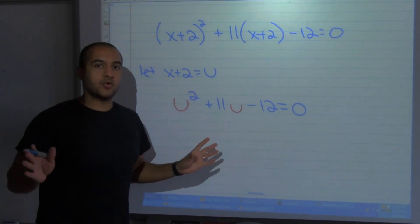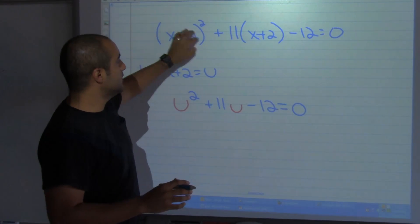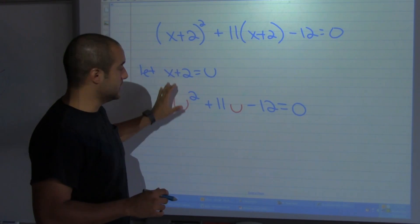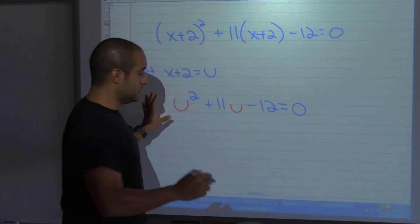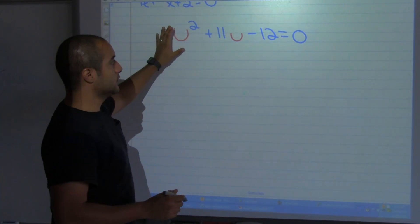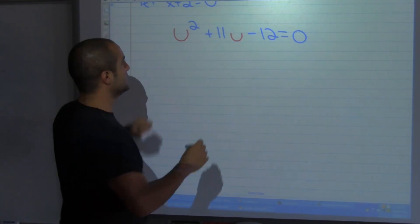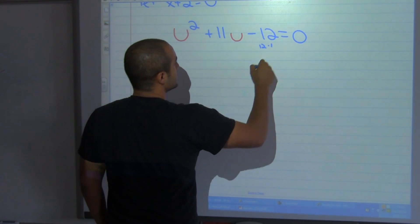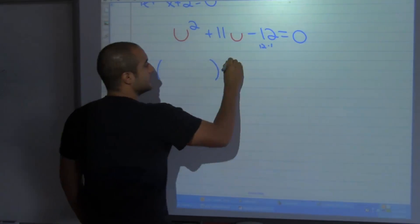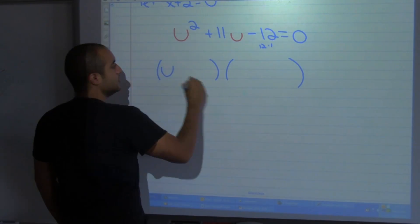And now it looks like a regular quadratic equation. So instead of dealing with this mess, we make our own substitution and we deal with something that we know we can do.